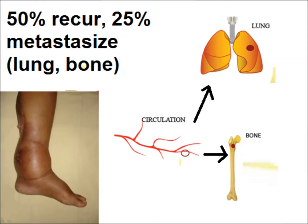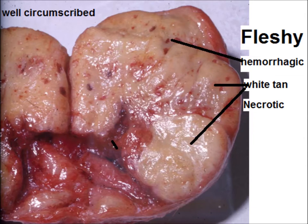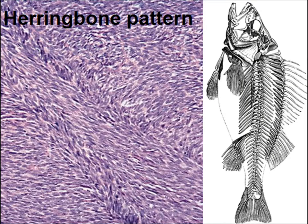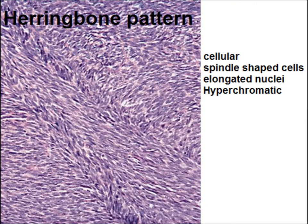50% of cases recur, and 25% metastasize to the lung or bone. Grossly, they are fleshy tumors, hemorrhagic, white to tan in color, and show areas of necrosis.